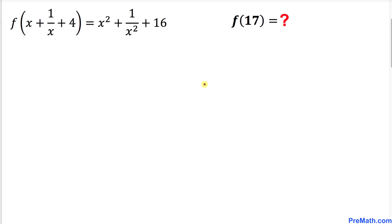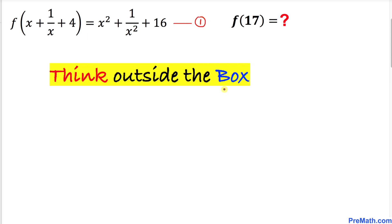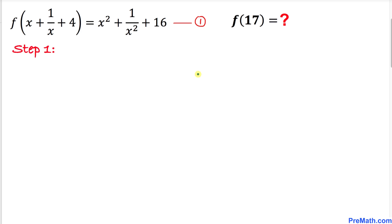Let's go ahead and get started with the solution. Let me call this very first equation as equation number 1. As we can see, we don't see any clear pattern to find f of 17, so therefore we are going to think outside the box.